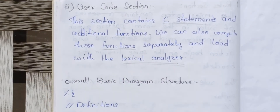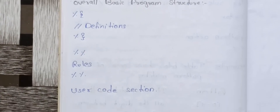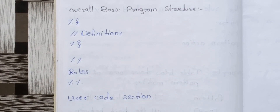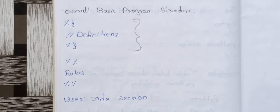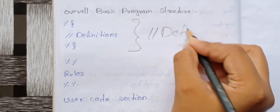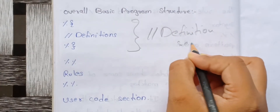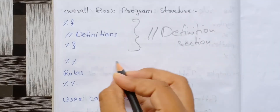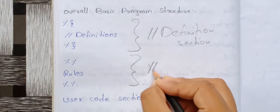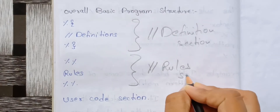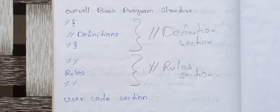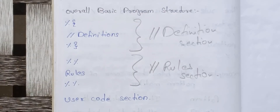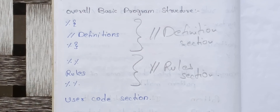So overall, the basic program structure of Lex has: first, the Definition section; then the Rules section; and finally the User Code section, where basic functions and C statements are included. So this is the complete topic.